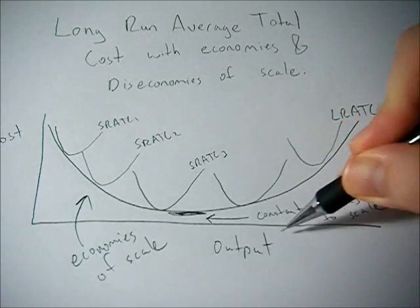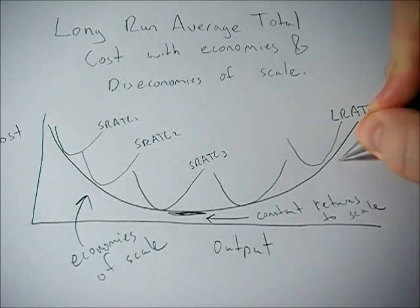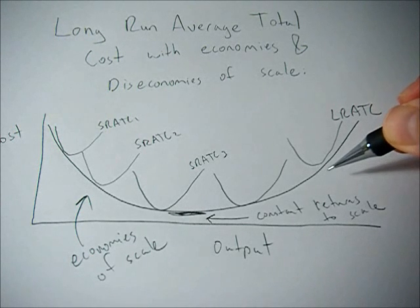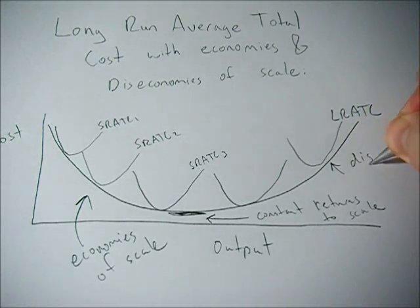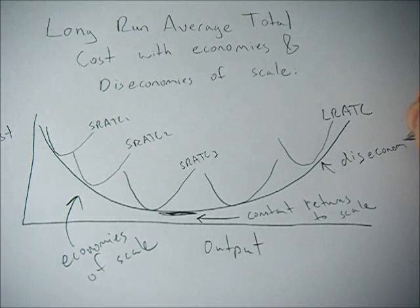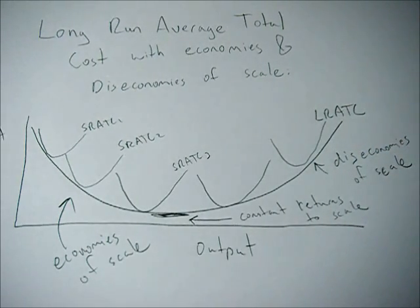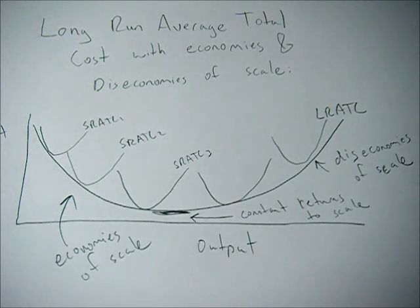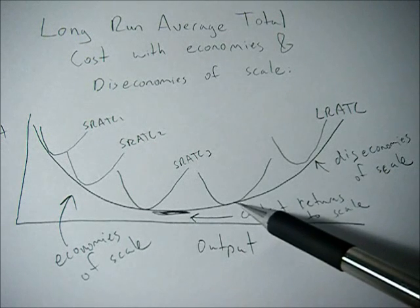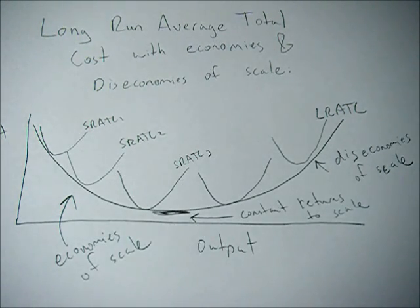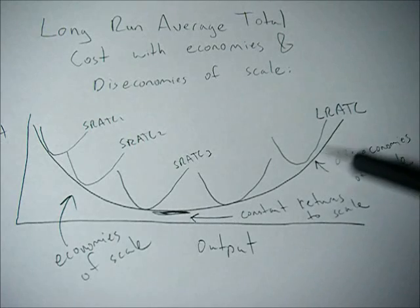Once we start getting very large and producing more and more output, we see costs rising. Average total cost is rising as we produce more, and in this range we're in diseconomies of scale. This means that if we double all of our inputs — hire twice as many people and get a factory twice as big — our output doesn't double, because average total cost is going up over this range. This is how economies of scale, constant returns to scale, and diseconomies of scale relate to our long run average total cost curve.